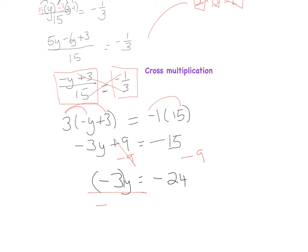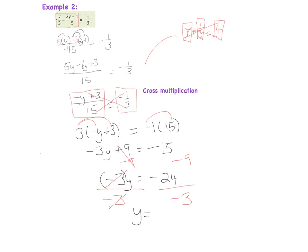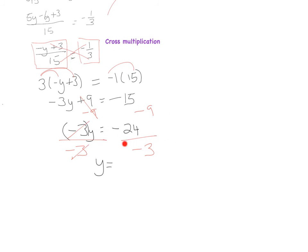I'm not looking for minus 3y, I want just y. This is minus 3 multiplied by y, so to get rid of it I divide by minus 3 on both sides. The minus 3s cancel on the left, leaving just y.